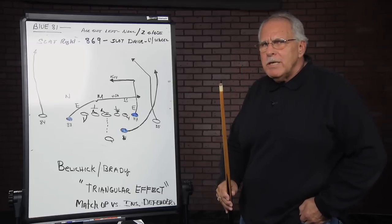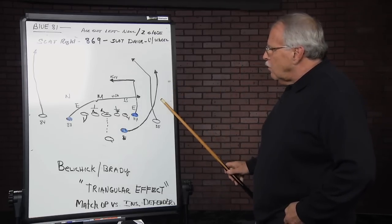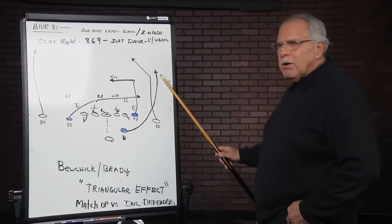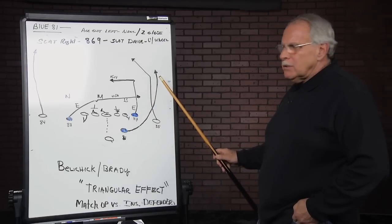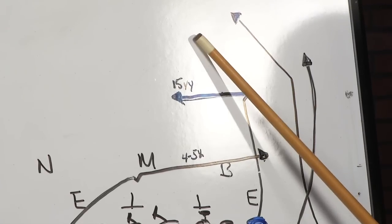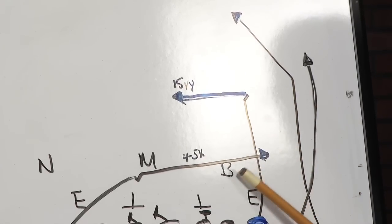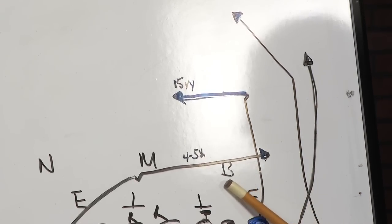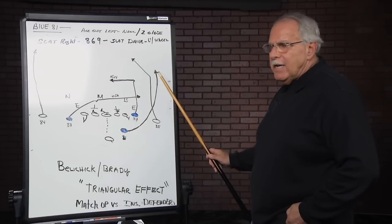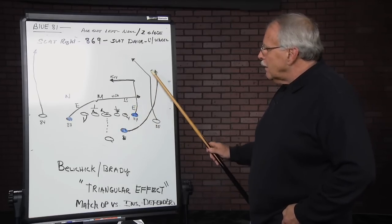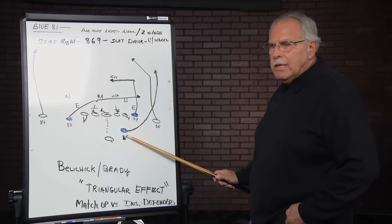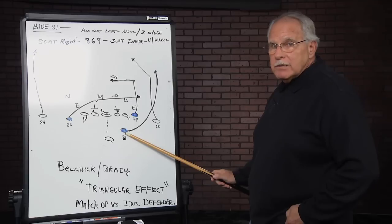Now the way the Patriots are going to read this is they're going to look at the corner, safety, linebacker to this side. The first priority is to throw the wheel to get the big play. If the corner retreats and the safety goes to the middle, they know they have a one-on-one with this linebacker. So chances are they're going to throw the ball up on a fade, or if the linebacker gets high, a back shoulder fade. That's where the versatility of a guy like Hernandez is critical.